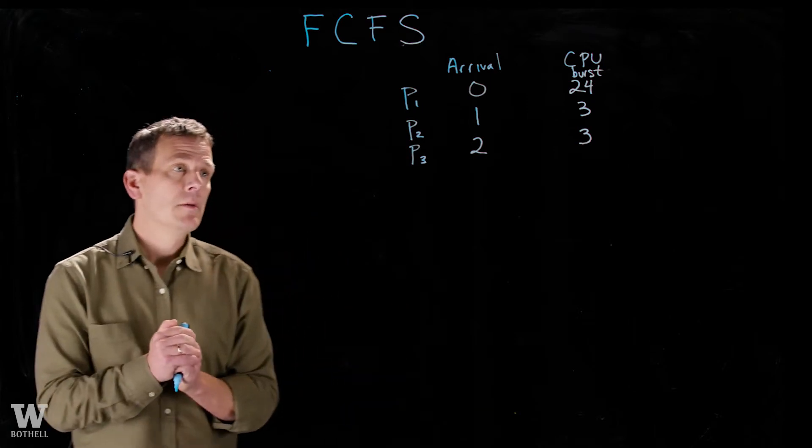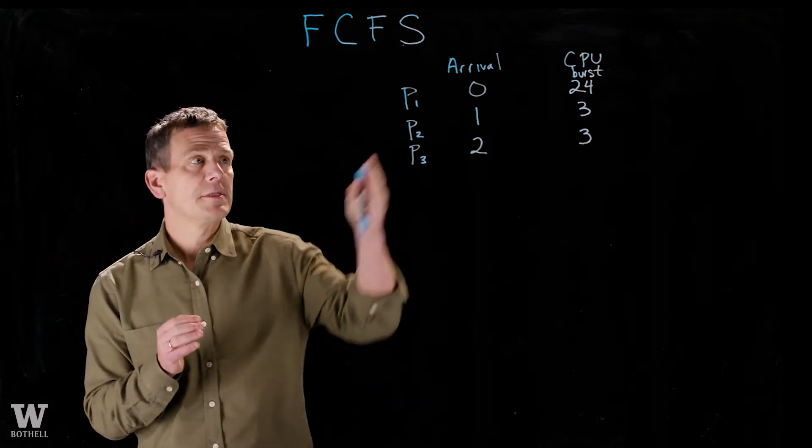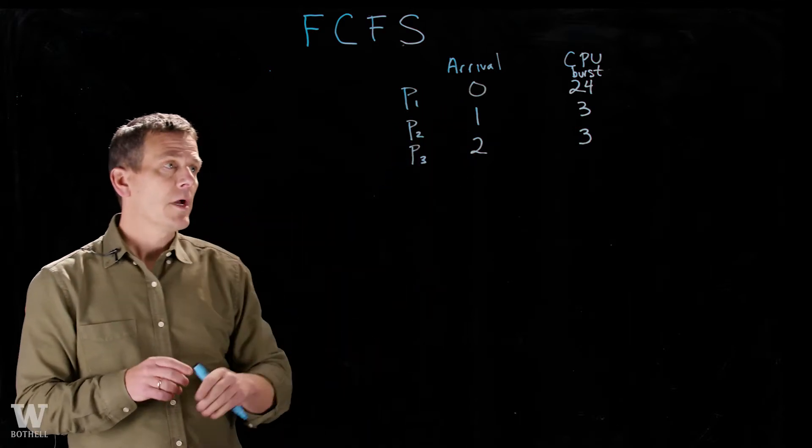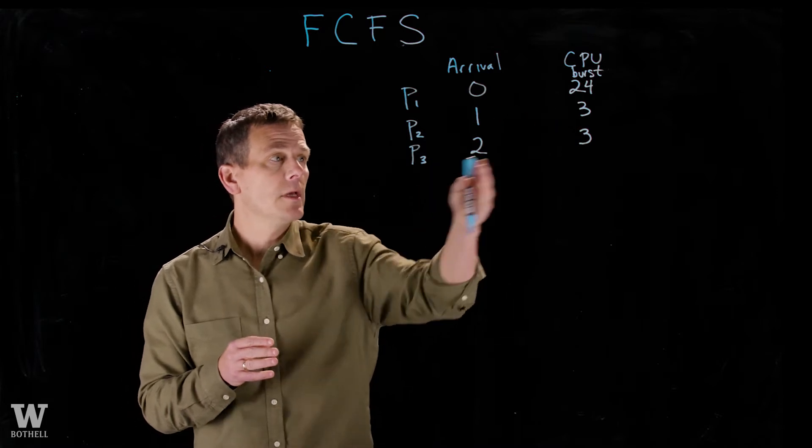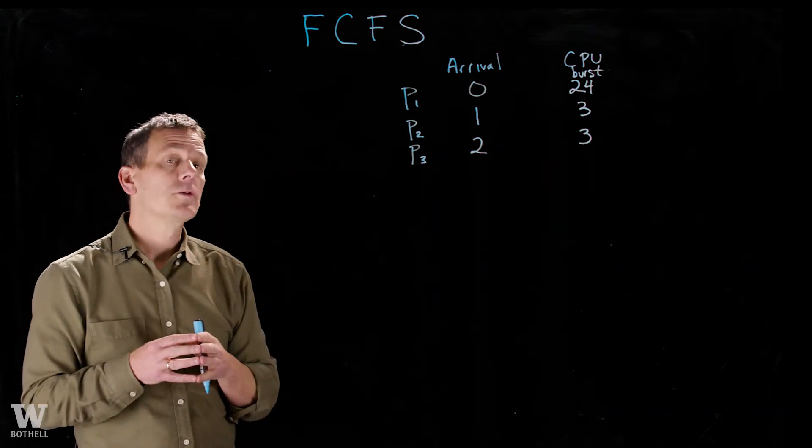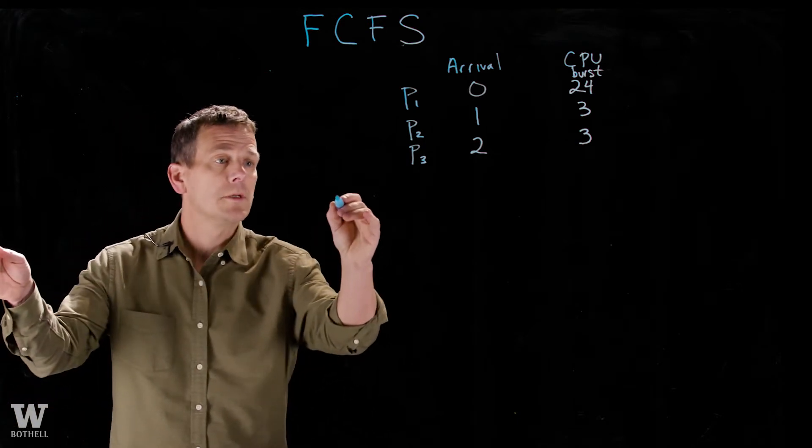Let's take a look at first-come-first-serve. So let's assume we have three processes with a thread each running. And these processes show up at time 0, 1, and 2. Process 1 requires 24 CPU units, process 2 requires 3, and process 3 also requires 3 CPU units. Let's see how first-come-first-serve would work for the CPU.